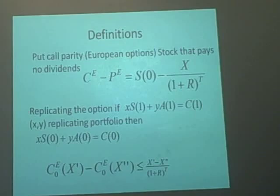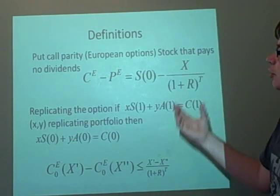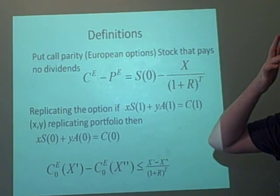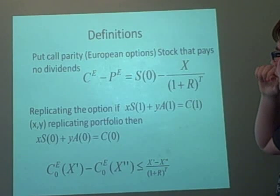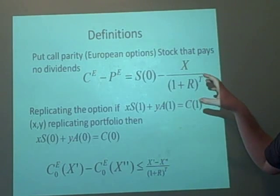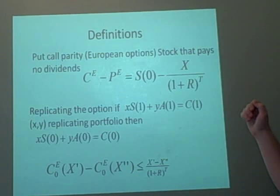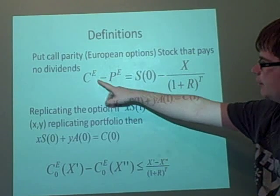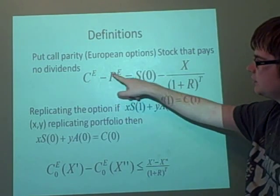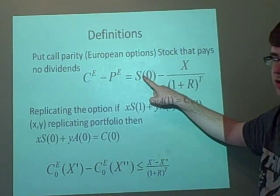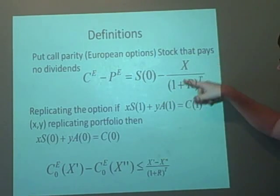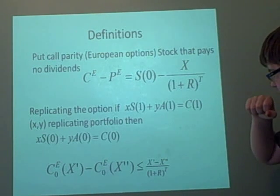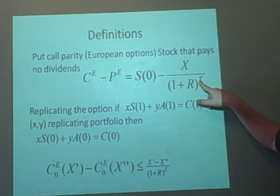More definitions I'm afraid. This is the put-call parity. This is quite important, and in a lot of exams it asks you to find out. So with a stock that pays no dividends, if it does pay a dividend, then you've got to use a previous formula to change it. But we've got C^E minus P^E is the stock at the original time minus X over (1+R)^T.